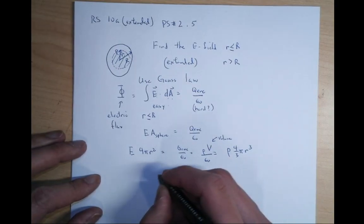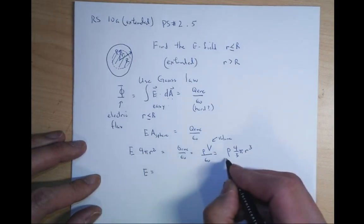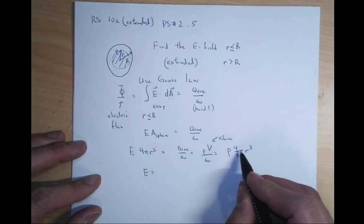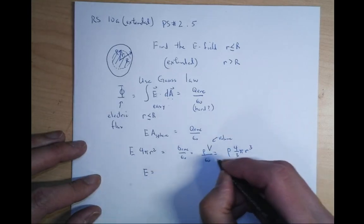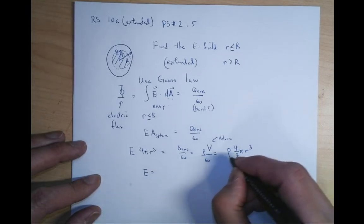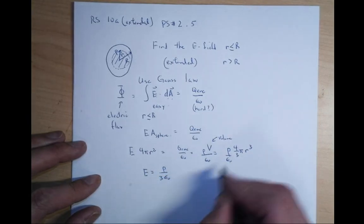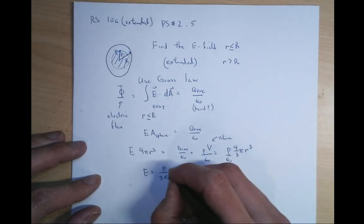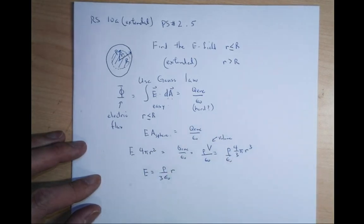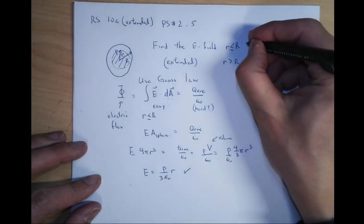So now E equals rho times (4/3)πr³ divided by 4πr² times epsilon naught. The 4π's cancel each other, and r² cancels one factor of r from r³, leaving E equals rho·r over 3·epsilon naught. And there, you're done with this part.